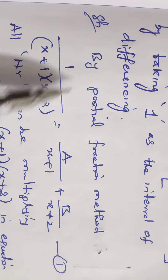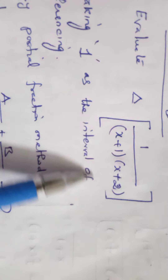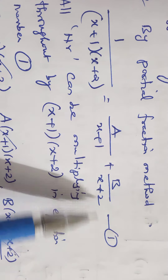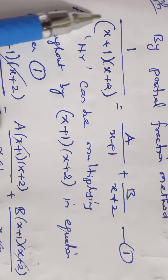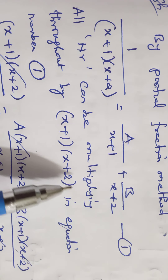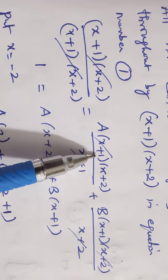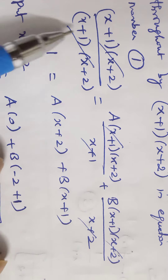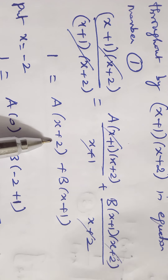We use the partial fraction method. Let 1 divided by (x+1)(x+2) equal A divided by (x+1) plus B divided by (x+2), which is equation number 1. Multiplying throughout by (x+1)(x+2), the denominators cancel and we get: 1 equals A(x+2) plus B(x+1).